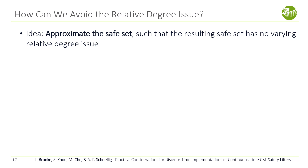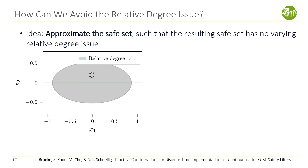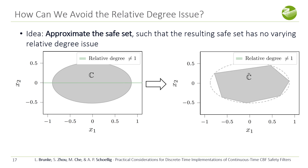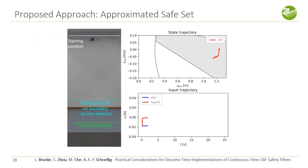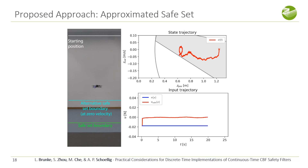Finally, we present our last method to approximate the safe set such that the resulting safe set has no varying relative degree issue. For example, a quadratic CBF safe set can be approximated by multiple affine CBFs instead. Note that the affine constraints have been selected such that the relative degree is always equal to one. We demonstrate this last method on the quadrotor system. The CBF safe set has been modified, leading the system to approach the boundary much slower from the start. The safety filter with the approximated safe set can keep the system inside this approximated safe set with no spikes in the control input.